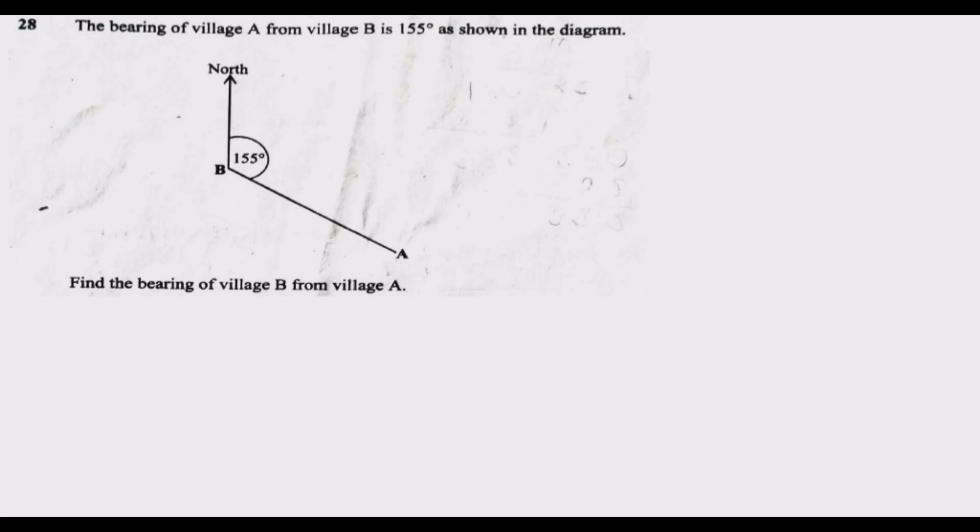Come to question 28. The bearing of village A from village B is 155 degrees as shown in the diagram.